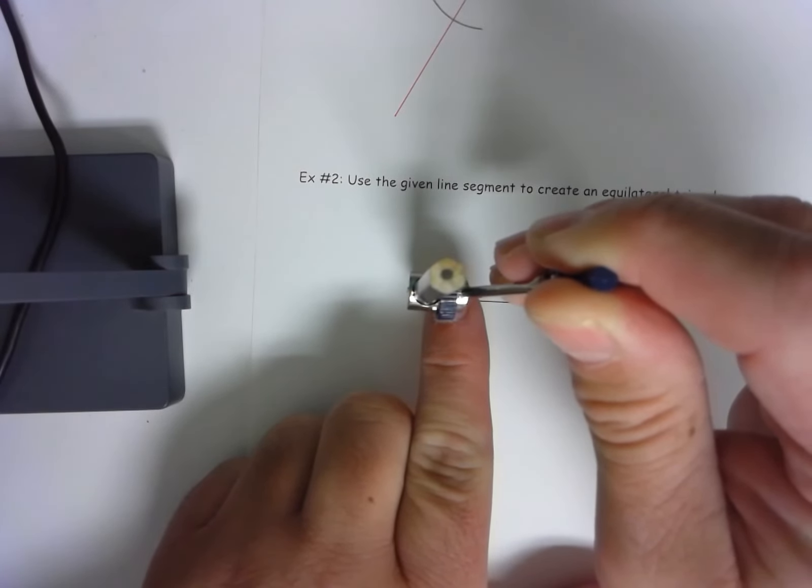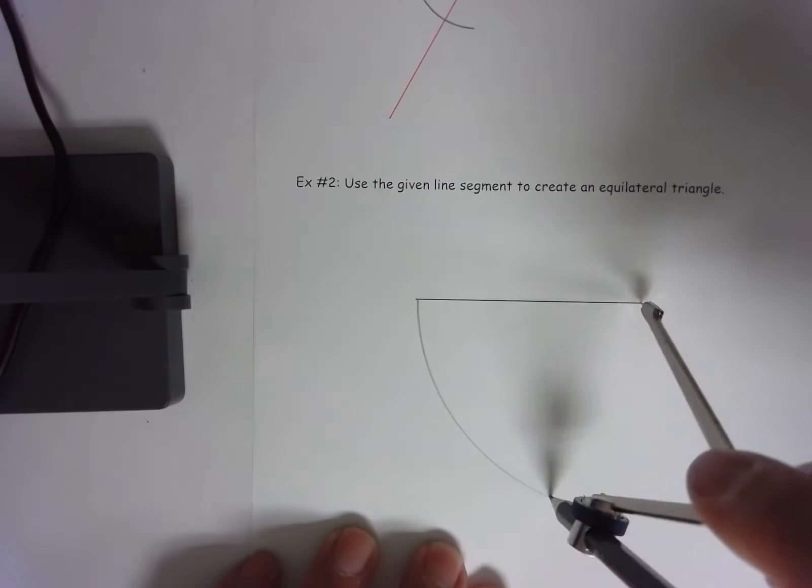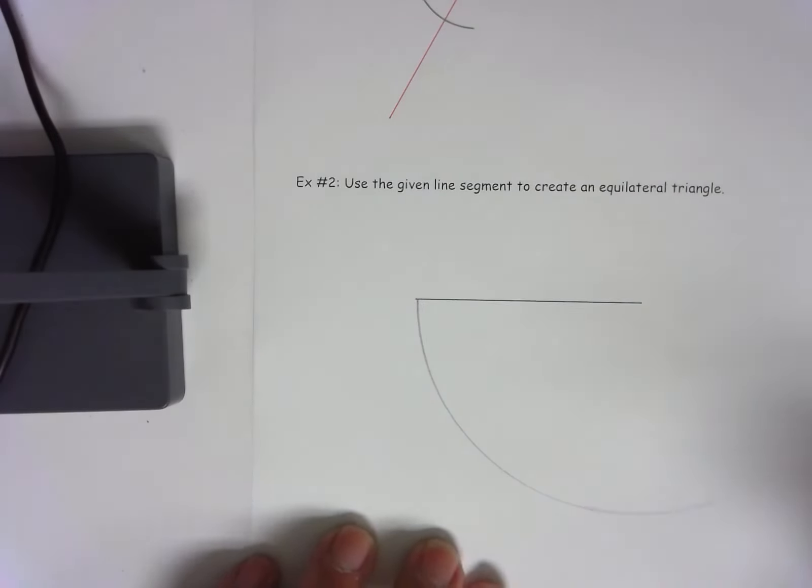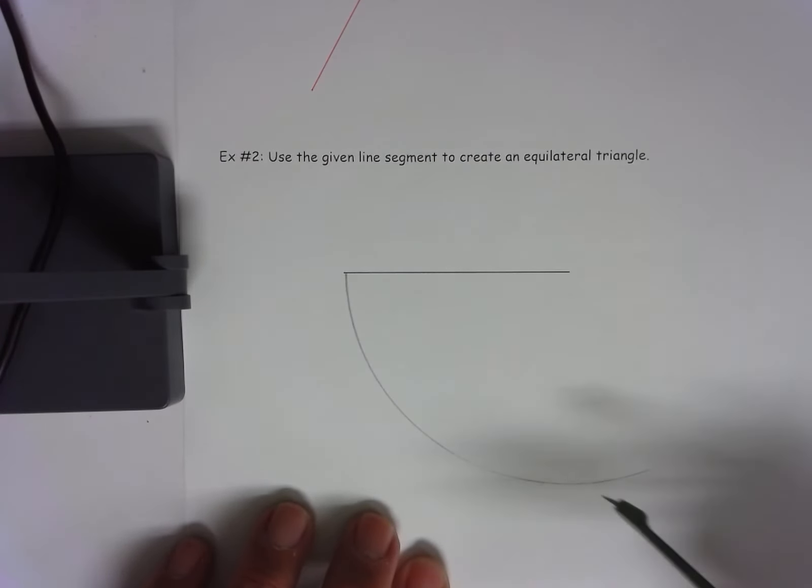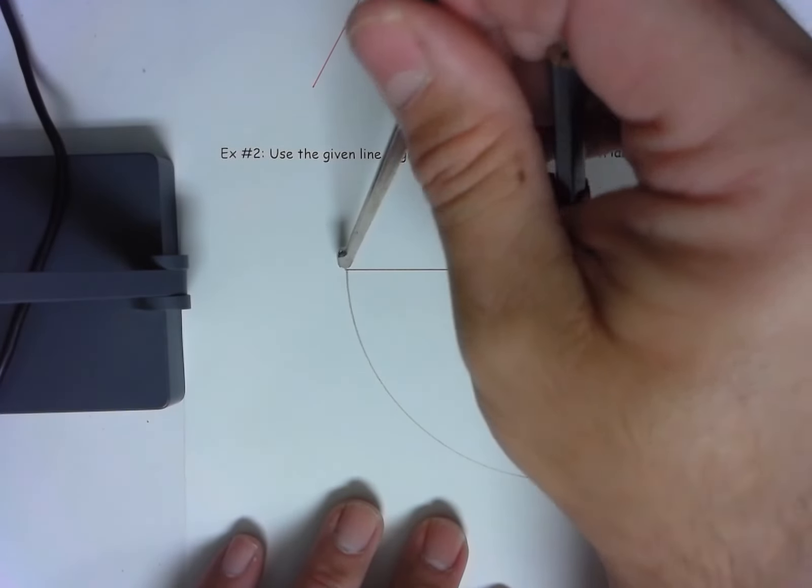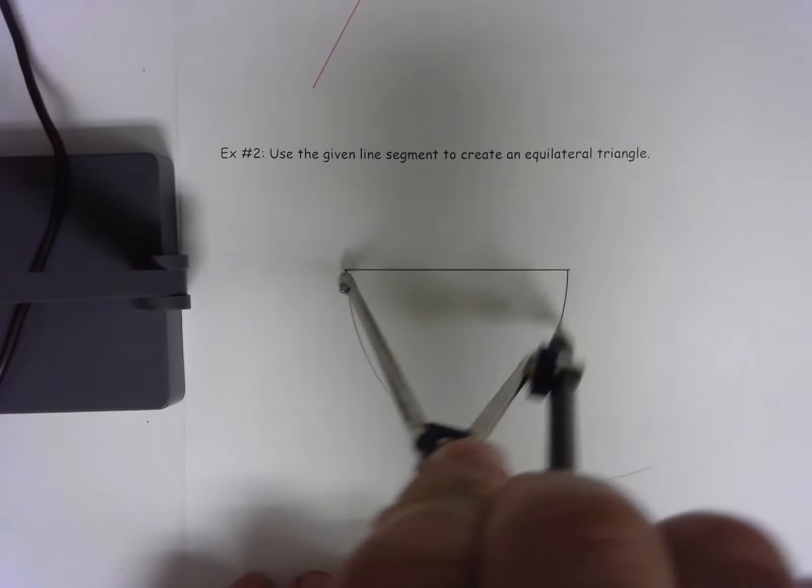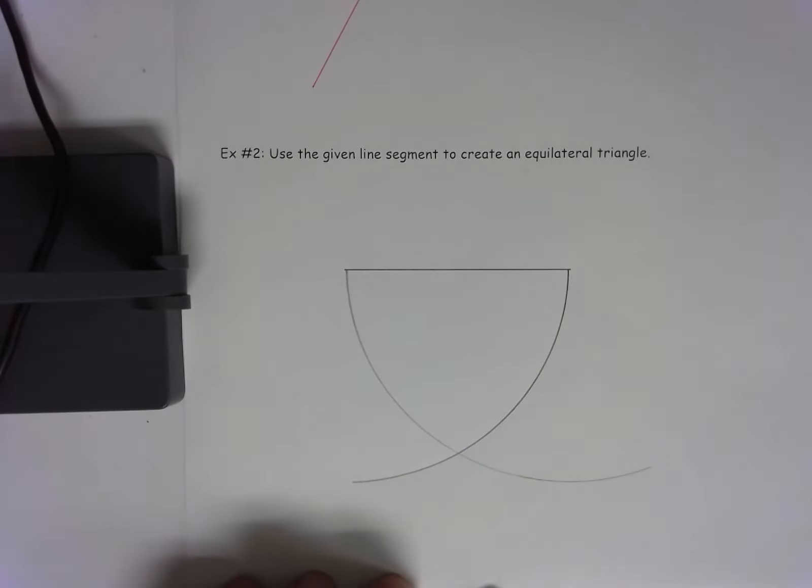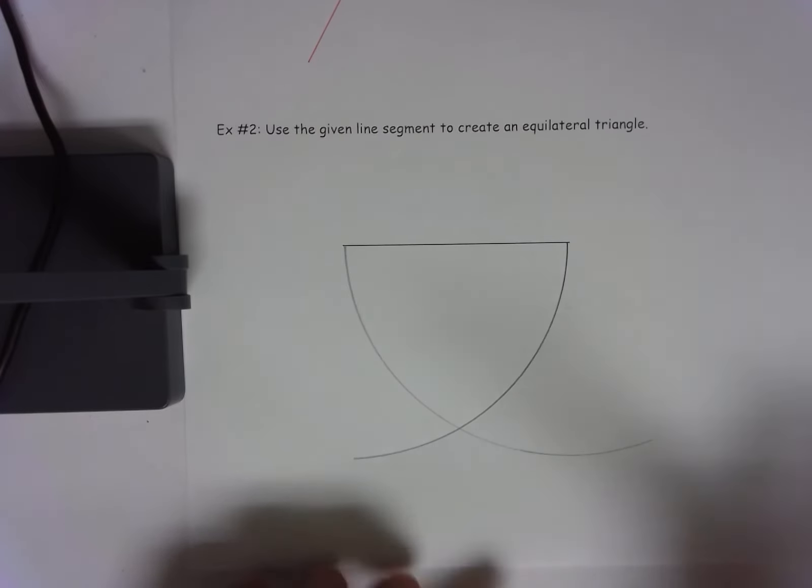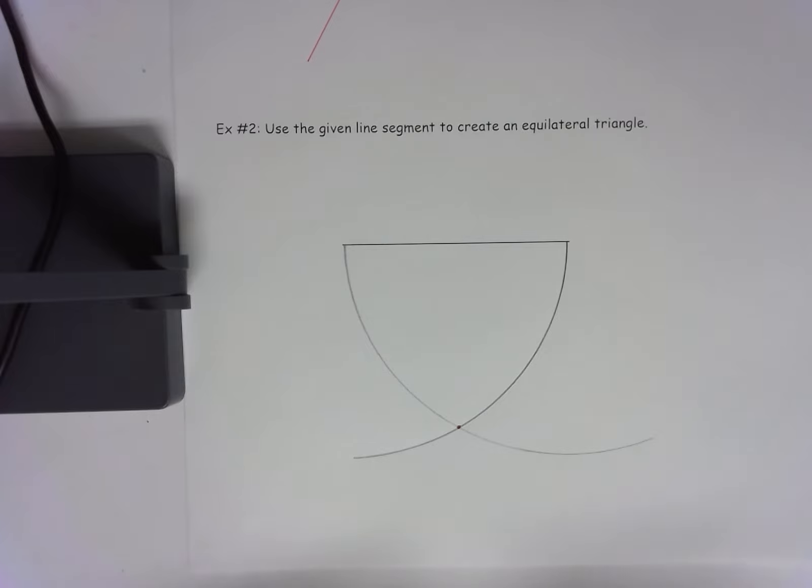I go from one end to the other, I now swing an arc and make sure that arc's plenty big because you want to make sure you have plenty of room to get there. Now just reverse it, swing that arc and you'll now have a point where they meet there at the intersection of the two arcs.